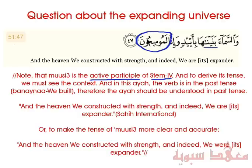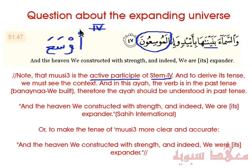As he said, this noun is derived from the Form 4 verb, which is 'awsa'a'. So in the past tense it would be 'awsa'a', then 'yusi'u' would be the present tense, and then 'musa'' / 'musa'oon' would be the active participle — the one doing this action is called a 'musa'', and then 'oona' is the plural, the plural of majesty that is used in the verse.